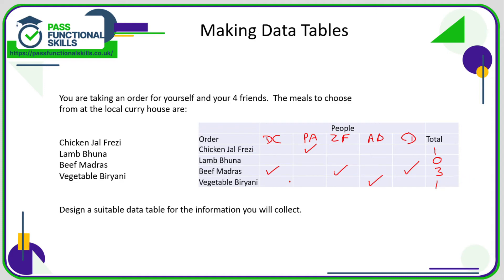Now it's quite easy to phone that order through to the curry house — one chicken jalfrezi, three beef madras, and one vegetable biryani. Of course that seems a bit over the top just for five people ordering from a choice of four things, but if there were a greater number of people and a greater choice, this type of data table would be very valid. The key thing is to make sure it's labeled correctly and that you've got the option to include your totals as well.